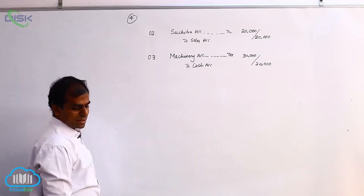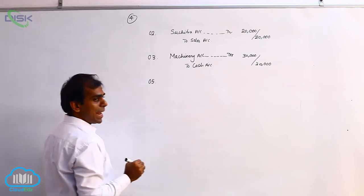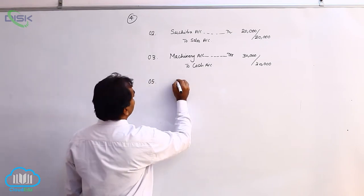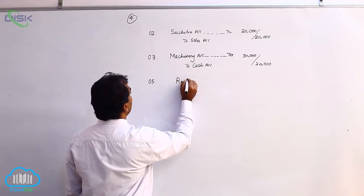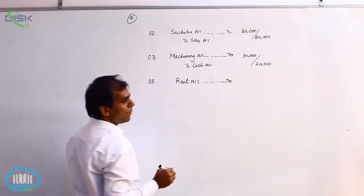Next transaction is on fifth, paid rent. So, rent is an expense here. So, nominal account, debit all expenses. We are applying and debiting the rent. So, rent account debit.